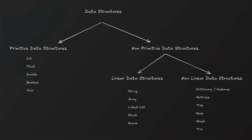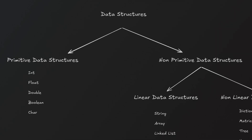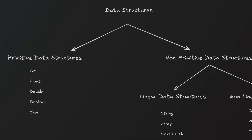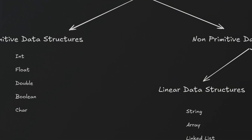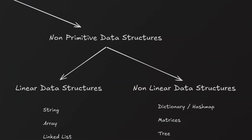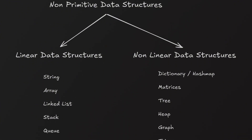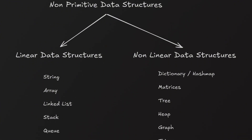Let's look at how data structures are classified. There are primitive and non-primitive data structures. Primitive means basic data types — int, float, character, double. Non-primitive data structures are further divided into linear data structures and non-linear data structures.